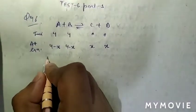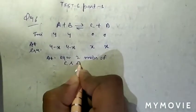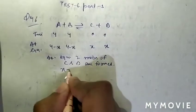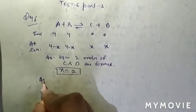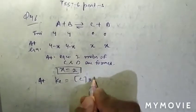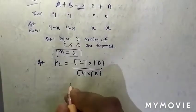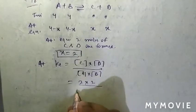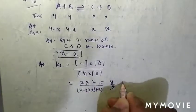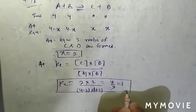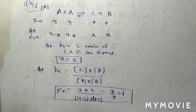At equilibrium, two moles each of C and D are found, so x equals two. Therefore Kc = [C][D] / [A][B] = (2×2) / (4−2)(4−2) = 4/4 = 1. So Kc is equal to one. Question number 46, option A is correct.